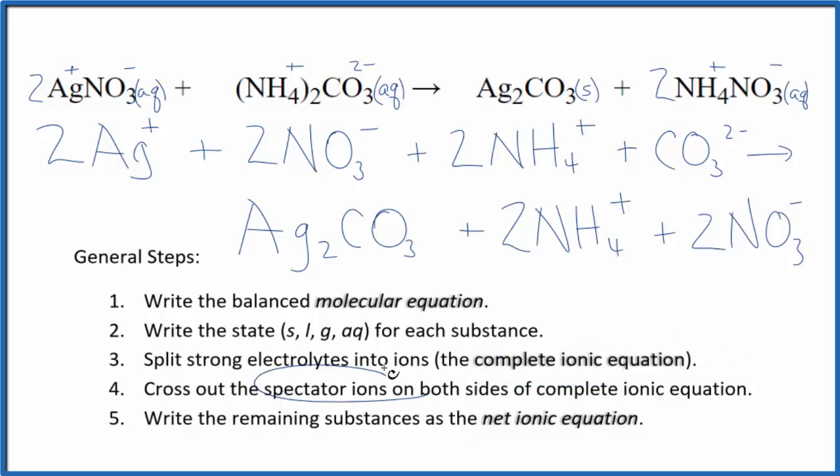Now we can cross out spectator ions. They're on both sides of that complete ionic equation. When I look at the reactants here and the products, I see I have these two nitrates in the reactants. I also have that in the products. These are spectator ions. We can cross those out.